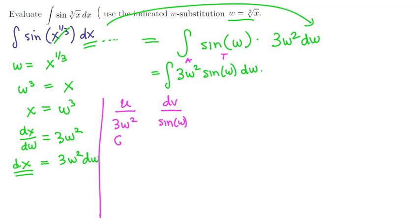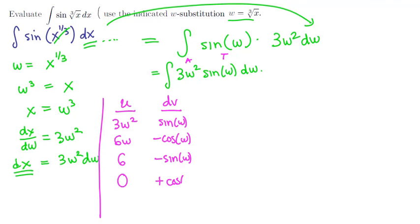We differentiate once to get 6w, and integrate once to get negative cosine of w. Differentiate twice to get 6, integrate twice to get negative sine of w. Differentiate again to get 0, integrate again to get cosine of w. Since we have a 0, we'll stop. We'll put in our arrows with signs: plus, minus, plus — and then minus the integral of zero times some stuff. Let's read off the answer.